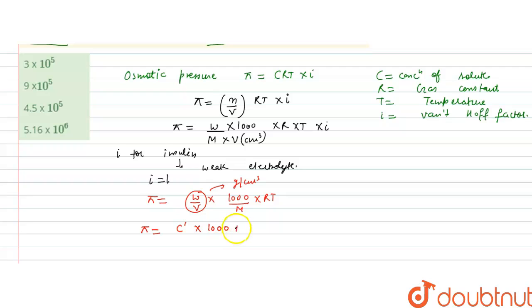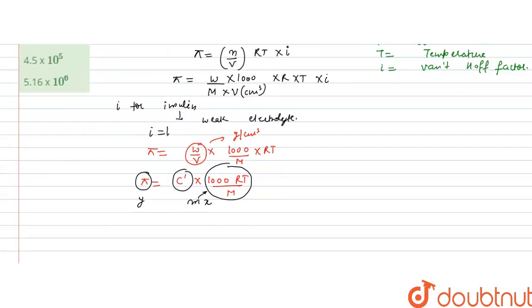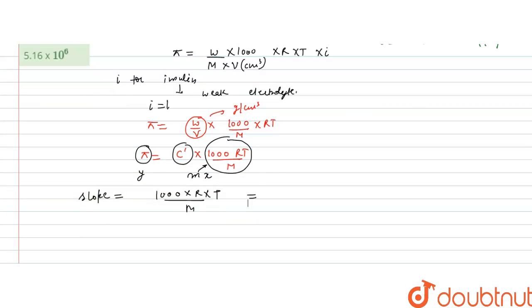We can write phi = (1000·RT/M) × c. If we plot the graph between phi and c, this is a y = mx type graph where phi is on the y-axis and concentration c is on the x-axis. The slope of this graph is 1000·RT/M, and the slope is given as 4.65 × 10⁻³.